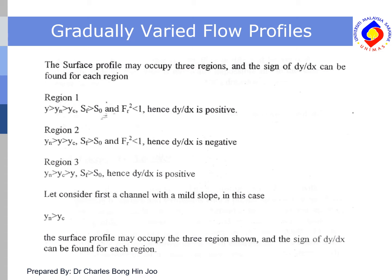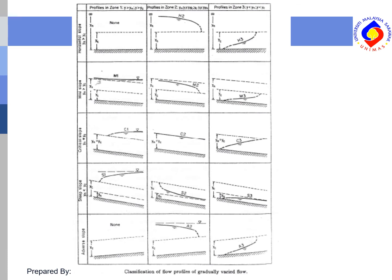For a mild slope, the normal depth is larger than the critical depth. The surface profile may occupy three regions and the sign of dy/dx can be found for each. The classification for the three regions according to different types of slope includes horizontal, mild, critical, steep, and adverse slopes. For mild slope, the normal depth line is higher than the critical depth line, while for steep slope, the critical depth line is higher than the normal depth line.